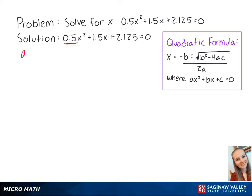In this equation, a equals 0.5, b equals 1.5, and c equals 2.125. So using the quadratic formula,